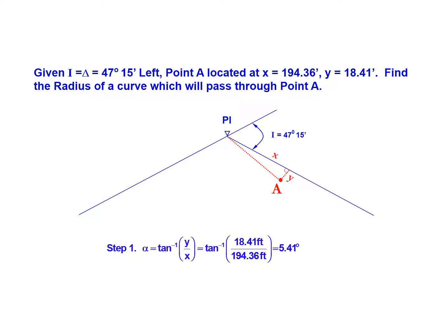So our first step is to determine alpha. This is the inverse tangent of y over x, where y was given as 18.41 feet and x is 194.36 feet. If we solve for this we'll find an alpha of 5.41 degrees.